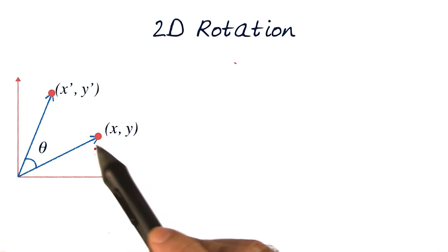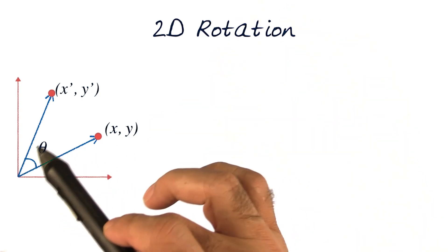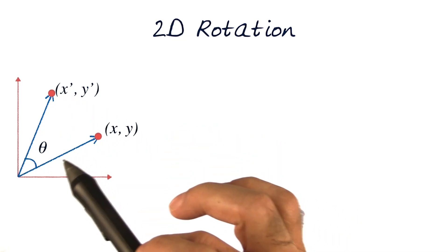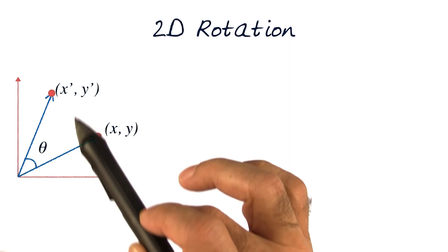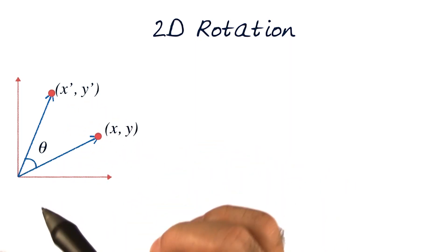Looking at the simple 2D example, let me ask the question. In this case of 2D rotation by theta, where I have transformed points x and y to x prime, y prime, the question is: how would I figure out the values of x prime, y prime, given x, y, and this angle theta?